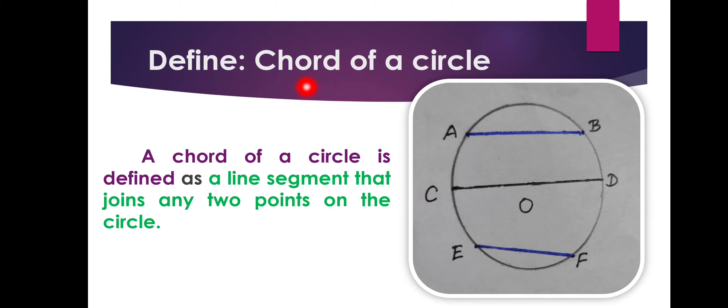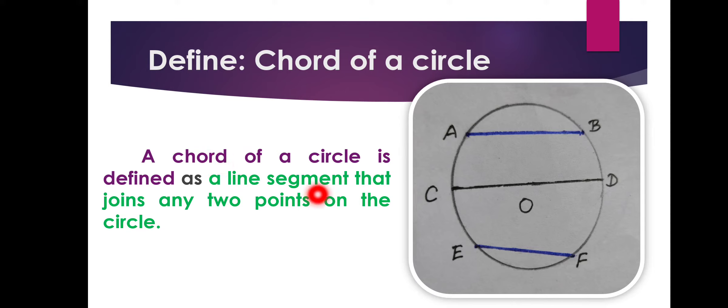Next, chord. A chord of a circle is defined as a line segment. So, like radius, a chord is also a line segment.